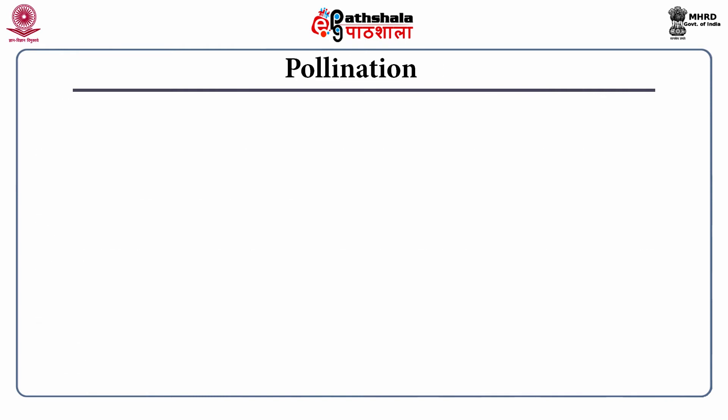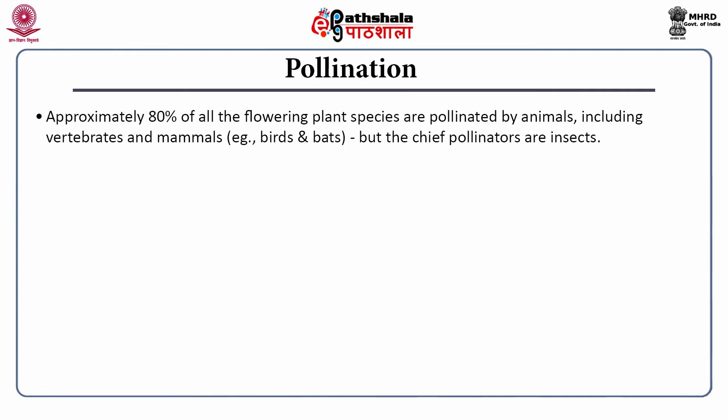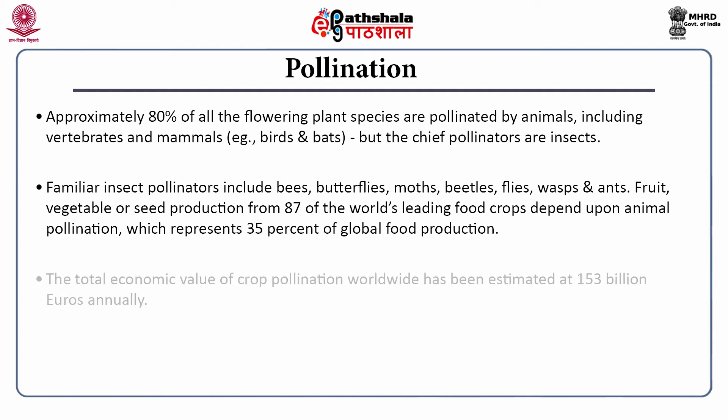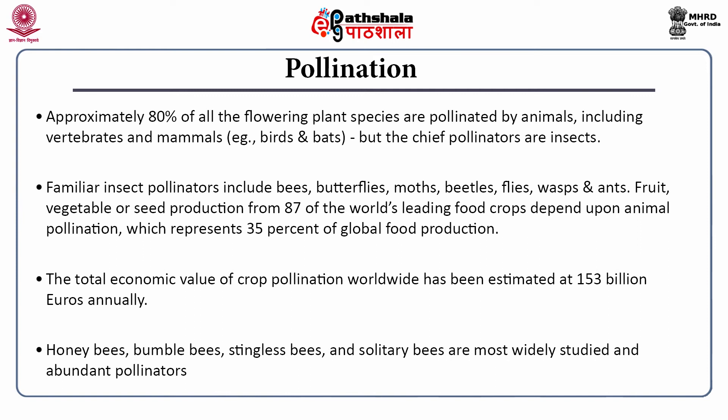The primary benefit from insects is pollination. Approximately 80 percent of all flowering plant species are pollinated by animals including vertebrates and mammals, but the chief pollinators are insects. Familiar insect pollinators include bees, butterflies, moths, beetles, flies, wasps and ants. Fruits, vegetables or seed production from 87 of the world's leading food crops depend upon animal pollination, representing 35 percent of global food production. The total economic value of crop pollination worldwide has been estimated at above 150 billion euros annually. Honey bees, bumble bees, stingless bees and solitary bees are the most widely studied and abundant pollinators.